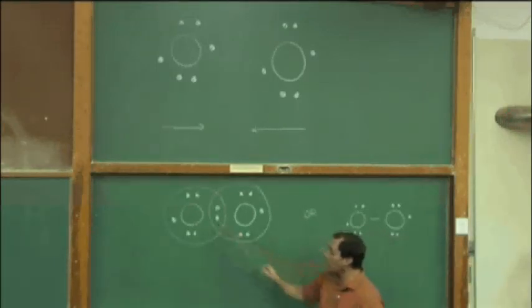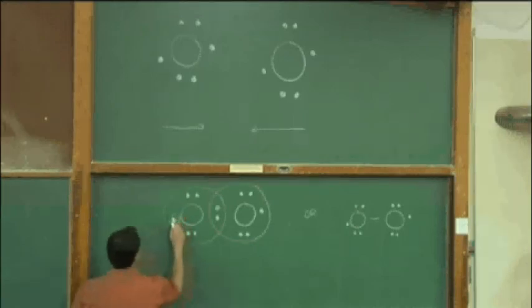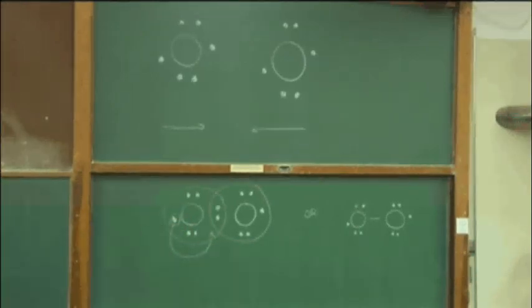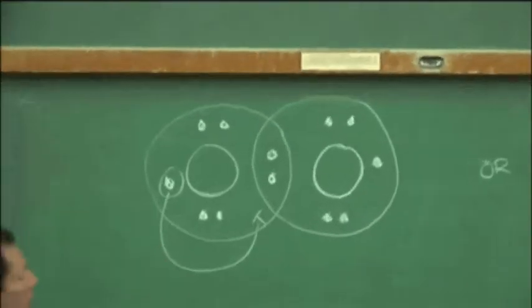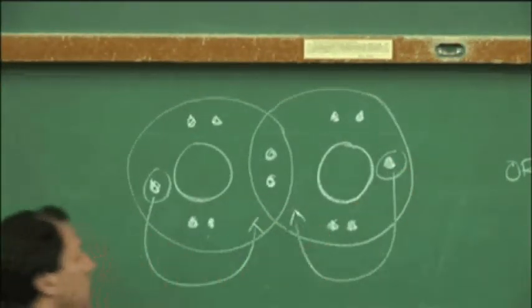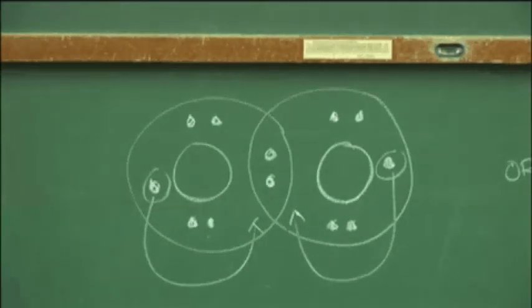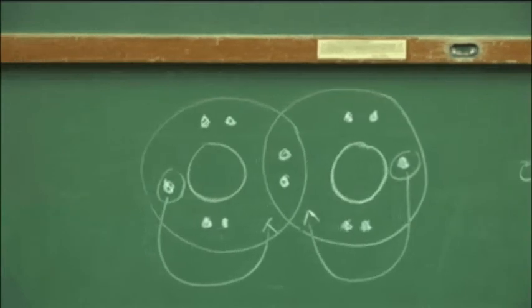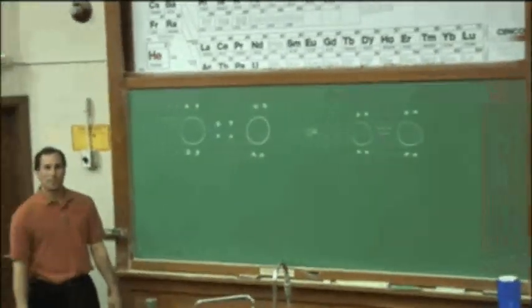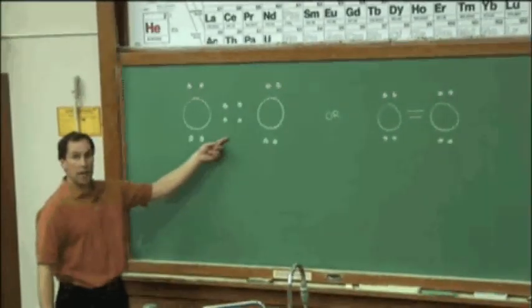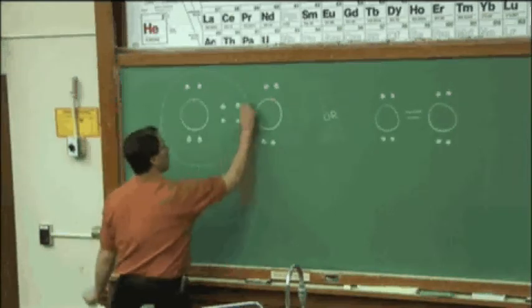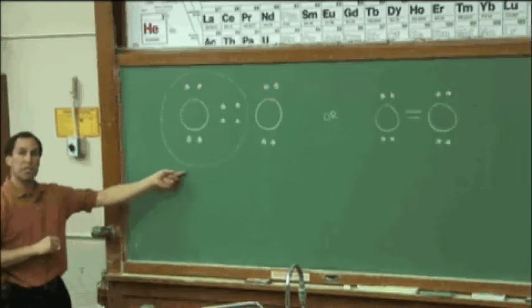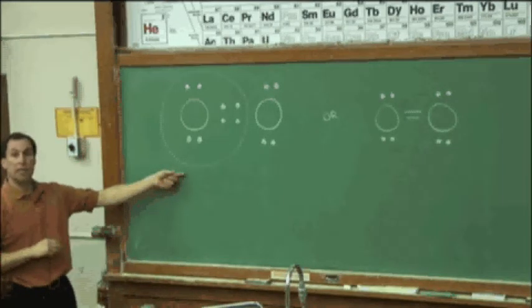Lewis suggested perhaps we could have a higher bond order. In other words, instead of a single bond, we might do something like this. Move more electrons into the bonding region. This electron on our blackboard, we're suggesting a model, move it into the bonding region. Do the same for the electron on the right oxygen. Instead of having two electrons in the bonding region, we now have four. Let me do my circles, or Venn diagram.